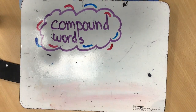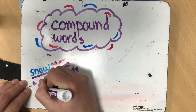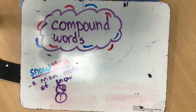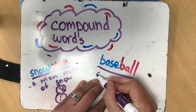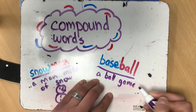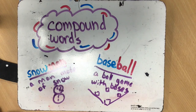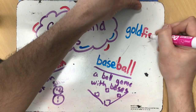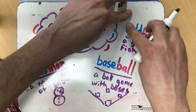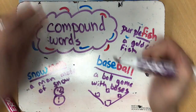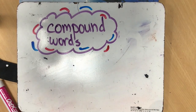Let's take a look at some basic examples here. You guys know snowman is made up of two words: snow and man. And the definition then is a man made out of snow. Baseball is made up of two words: base and ball. And that is a ball game using bases — that's what we call those things that we run around. And then we have goldfish. Well, I don't have a gold marker, so let's go to purplefish. A purplefish is a fish that is purple. So there's a look at some basic compound words.